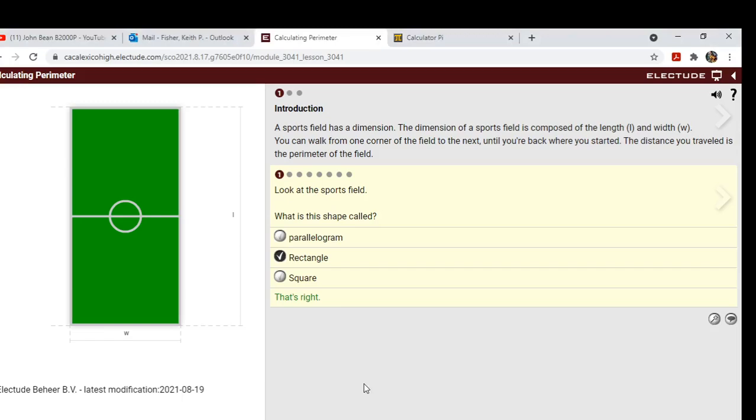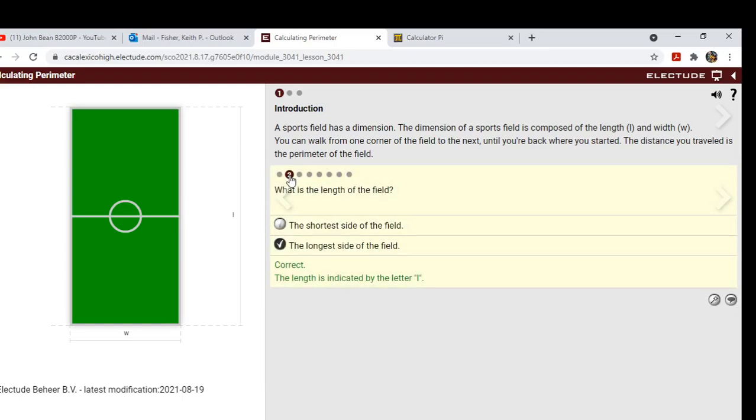Okay, so we're looking at calculating perimeter today. It's pretty simple, the first lesson asks you basic questions about length and width. Here we see a rectangle with length and width. There's going to be two lengths and two widths.